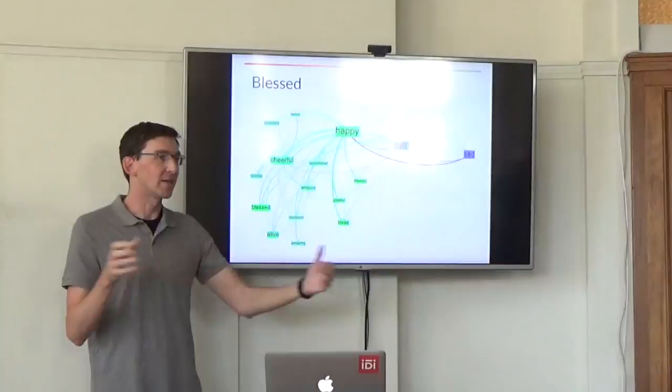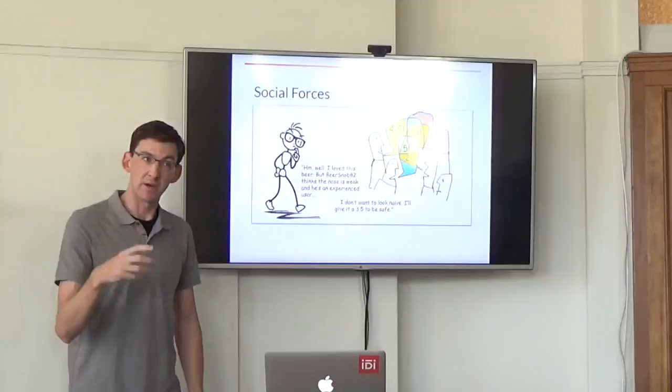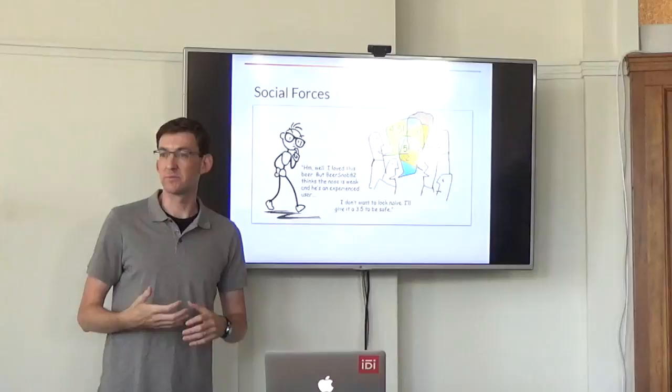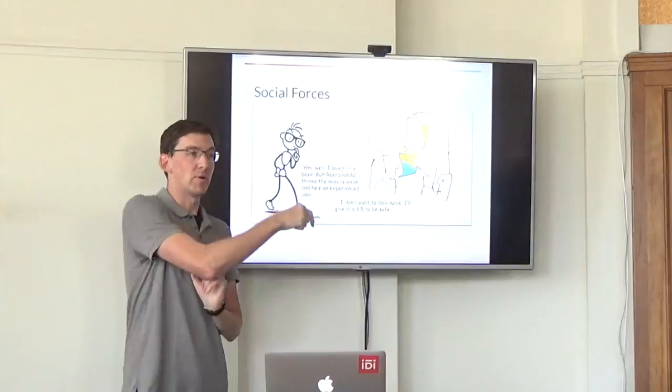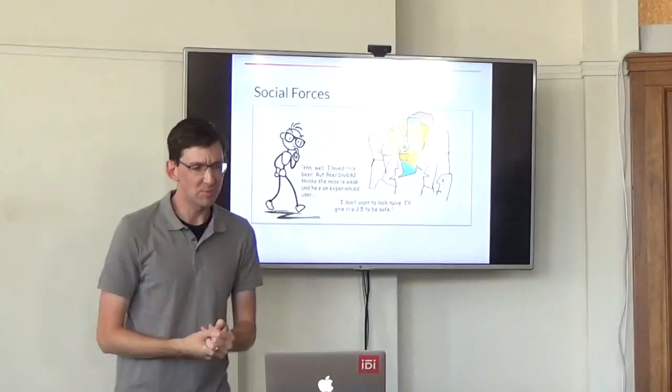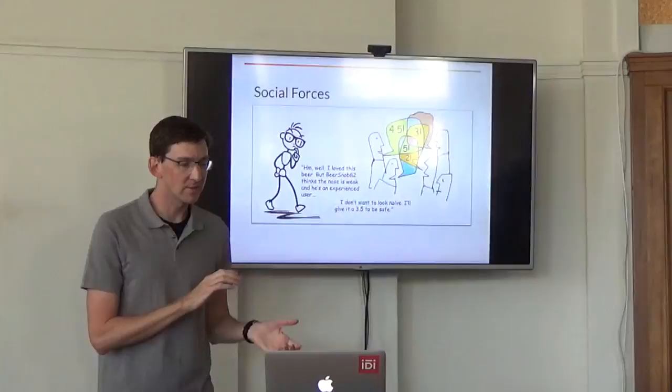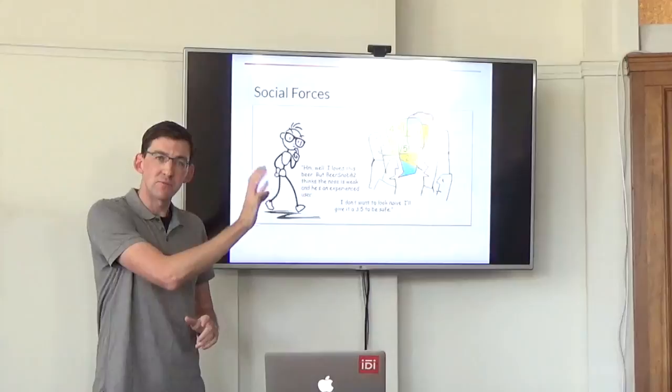So the other experiment that we did in this paper is very similar, except now we'll bring in a social dimension. And this maybe has more relevance for the kind of things that you all do. So we were interested back in the rating setting, typical for sentiment analysis, how people are being influenced when they make a rating choice by the other people who have rated that same product. So here in this little cartoon, that guy is saying, well, I love this beer, but beer snob 82 thinks the nose is weak and he's an experienced user. I don't want to look naive, so I'll give it a 3.5 to be safe. So maybe this user was originally going to do five stars, but modeled the community and then it ended up at a different place.